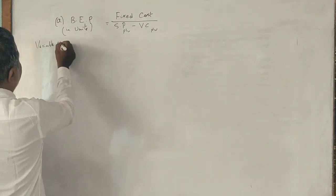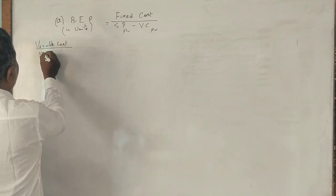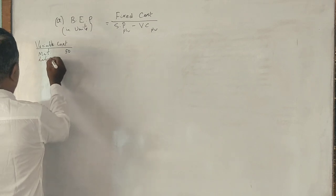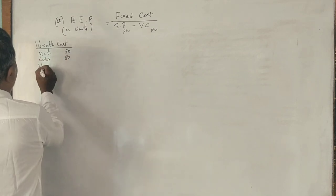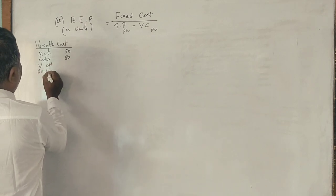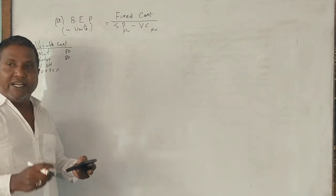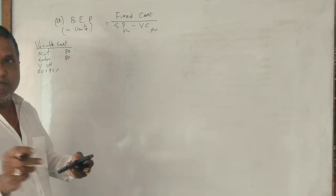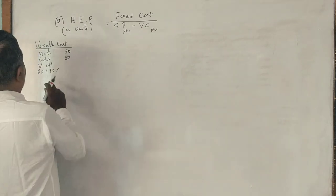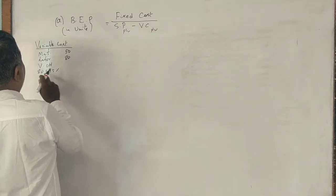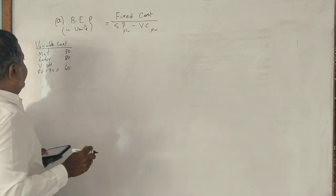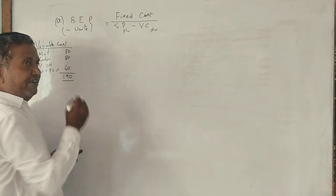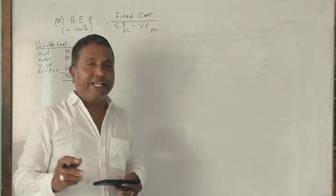Variable cost is 50 rupees material, labour is 80 rupees, variable overhead is 75% of labour, so 60 rupees. Total variable cost is 190 rupees.